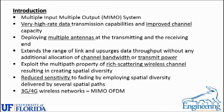MIMO is a multiple input multiple output system which gives a very high data rate and improves the channel capacity. MIMO usually works by deploying multiple antennas at the receiver and the transmitter. It can extend the range of the link and upsurge the data throughput. The most attractive feature of MIMO is that it doesn't require any additional allocation of channel bandwidth or transmit power. MIMO exploits the multipath property of rich scattering wireless channels, which results in spatial diversity, by reducing sensitivity to fading and delivering the spectrum across several spatial paths.